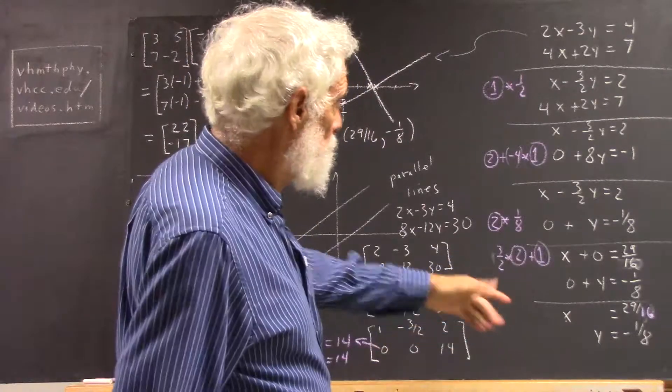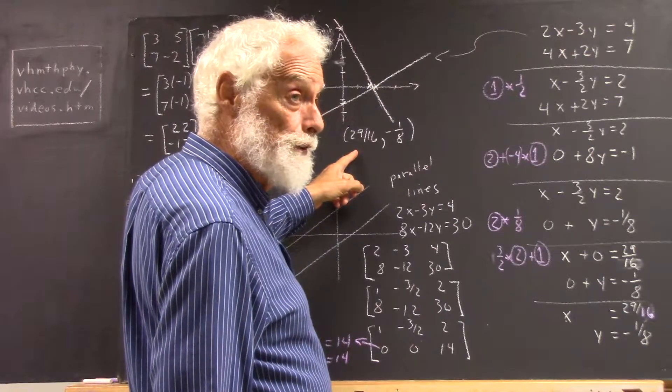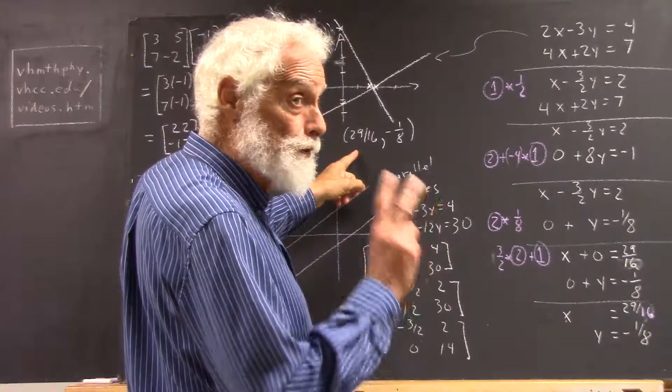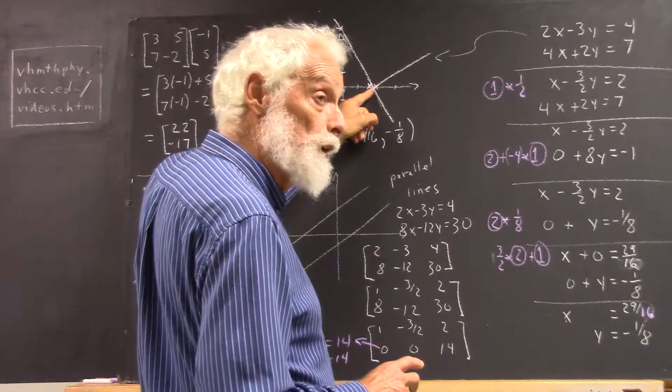Well, our solution was 29 sixteenths, negative 1 eighth. The x-coordinate should be 29 sixteenths, 32 sixteenths is 2, so this is a little to the left of 2, just as this intersection point is.